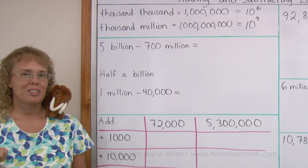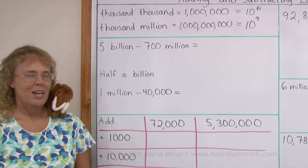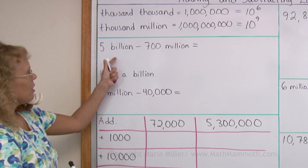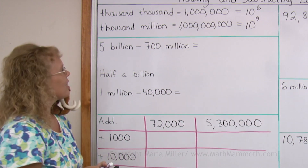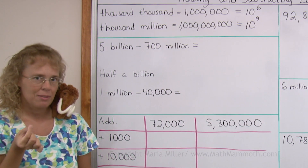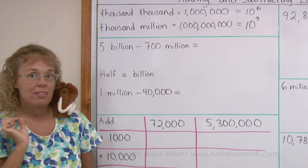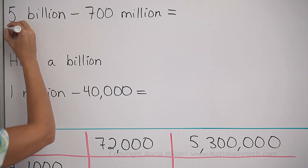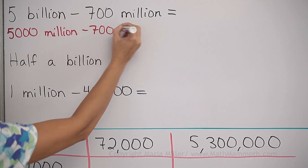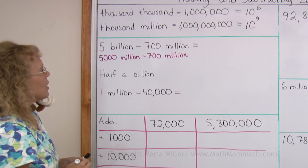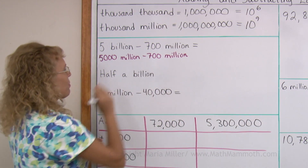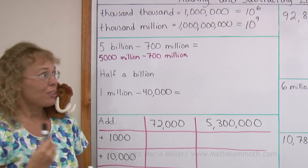You will soon see what I mean by using those in our mental math. If I have five billion minus seven hundred million — billions and millions — I cannot subtract directly. But if I think of one billion as being a thousand million, then five billion is five thousand million. This is actually the same as five thousand million, minus seven hundred million. Now I can think of those millions as apples or whatever — it's like five thousand minus seven hundred, and that I can do mentally. It's going to be four thousand three hundred.